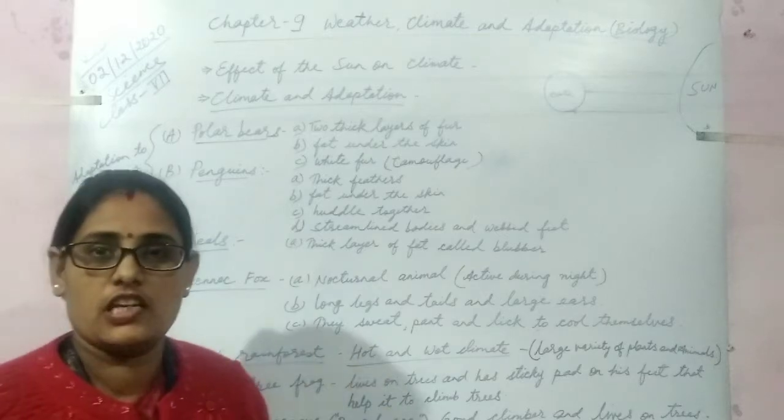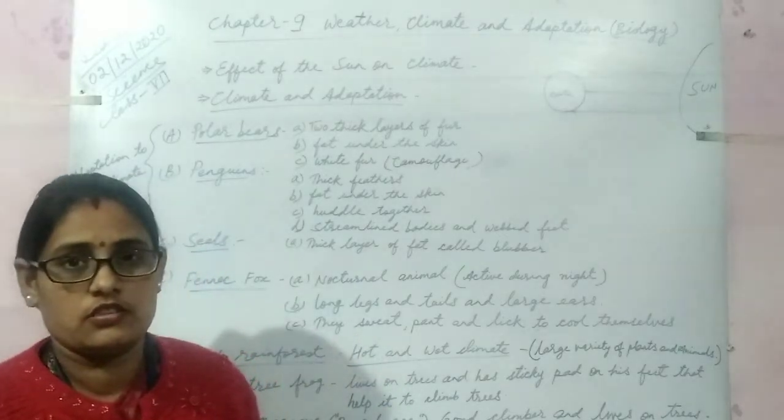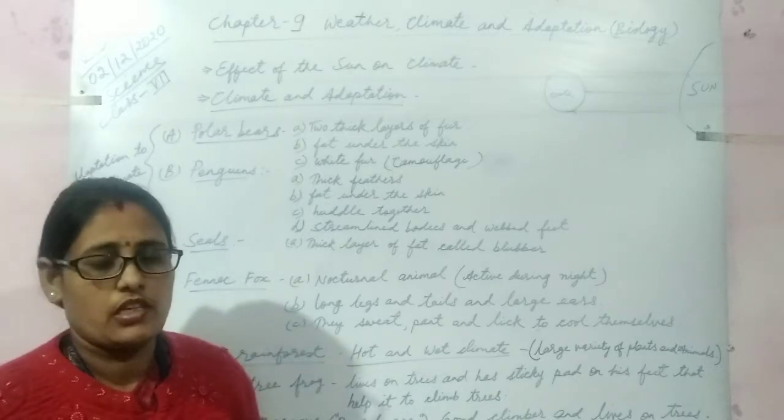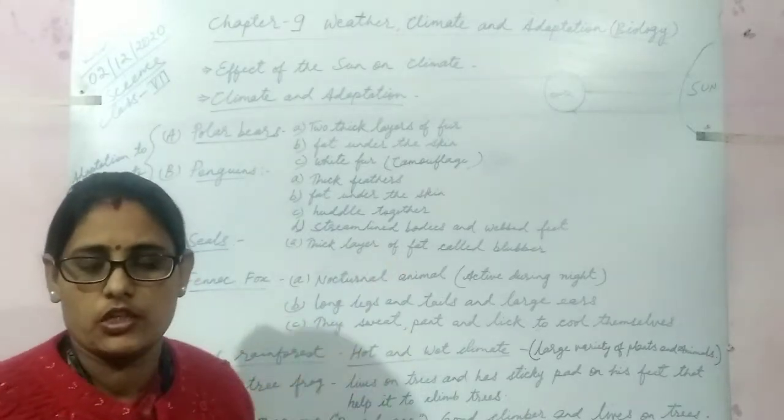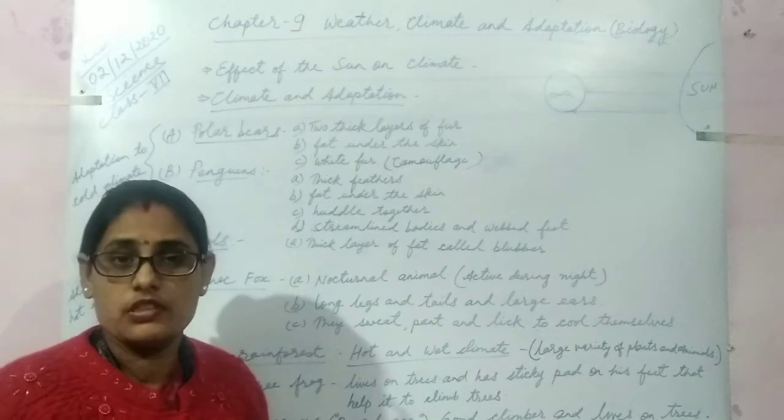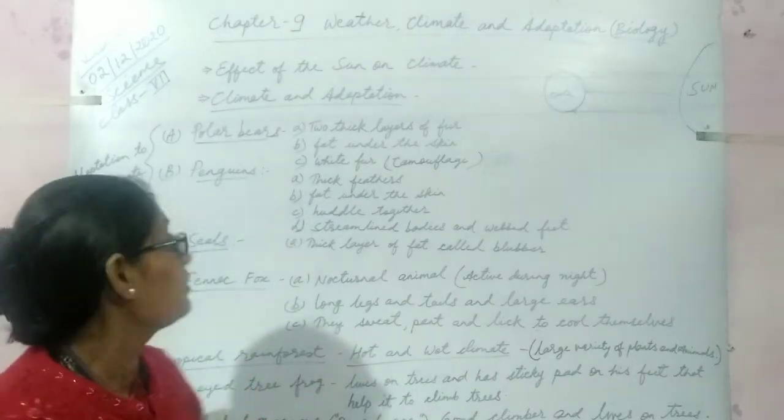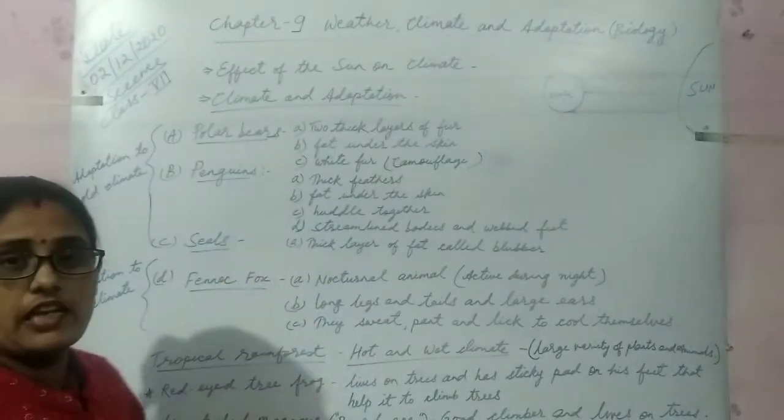We know that the areas near equator are very hot because the sun rays fall directly over there. And as we go far away from equator we feel colder because the rays become more and more slanting. Now, climate and adaptation.